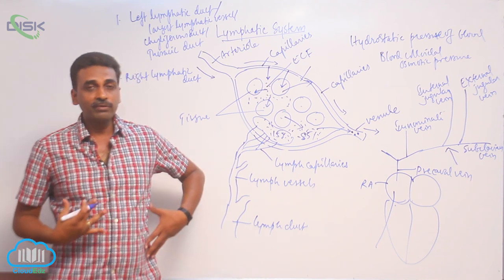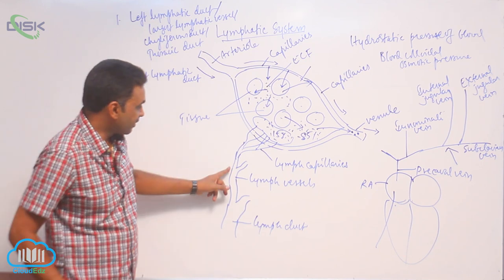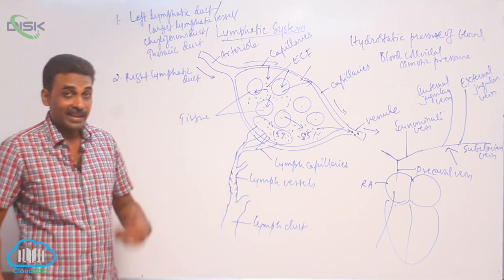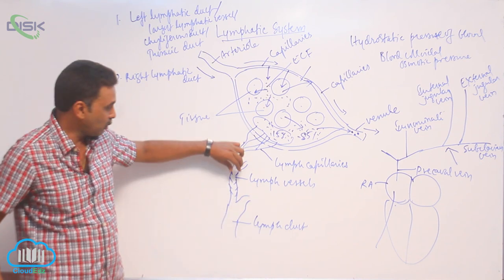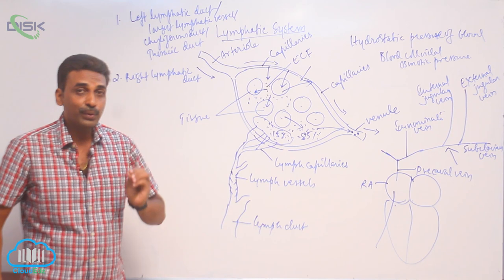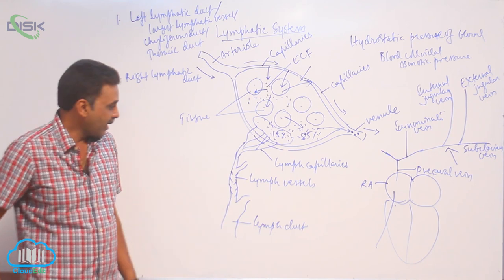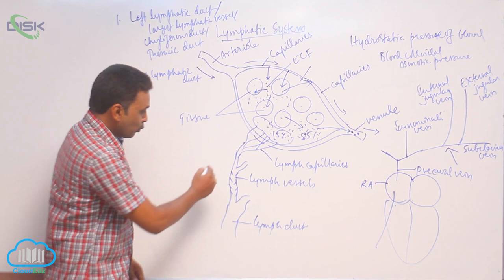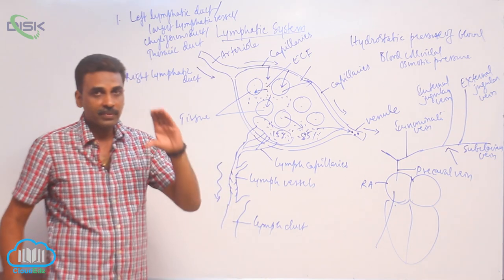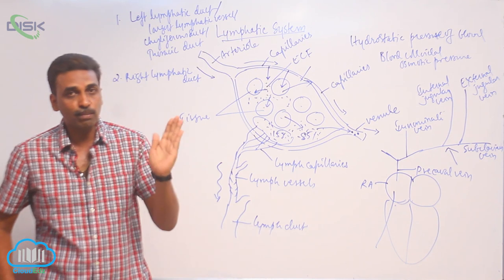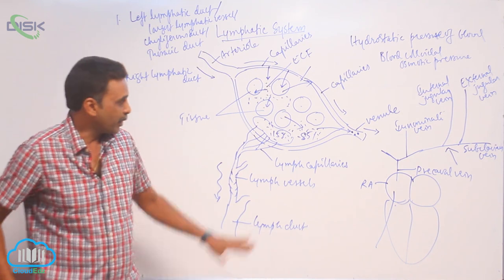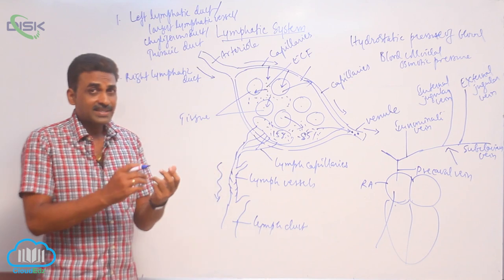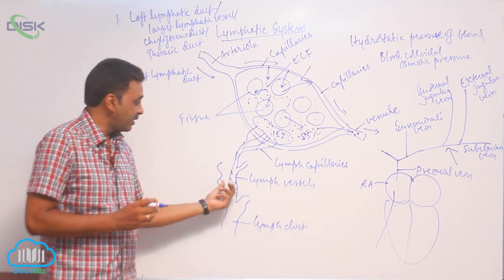Compared to the right, the left lymphatic duct is larger. Inside lymph vessels and lymph ducts there are valves, just like in veins, which facilitate unidirectional flow of lymph. Inside the walls of the lymphatic system there are smooth muscles which help in peristalsis — wave-like contractions — which push the lymph forward slowly, as this fluid is moving under low pressure.